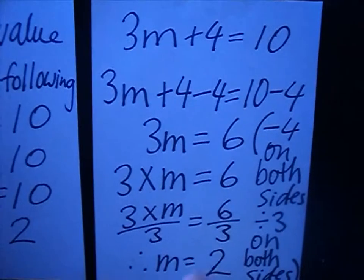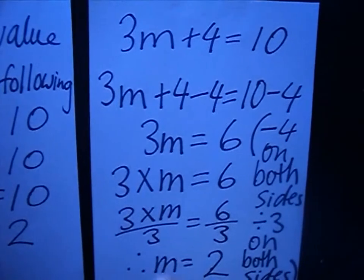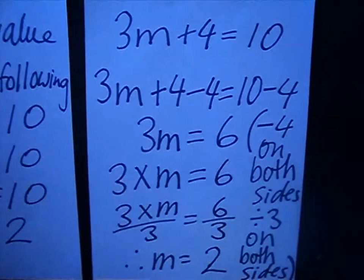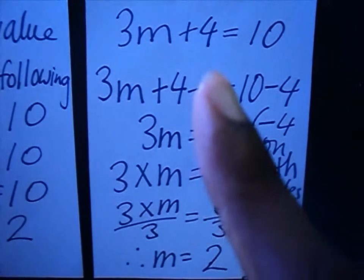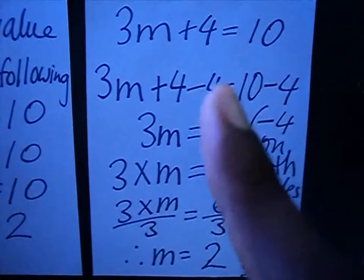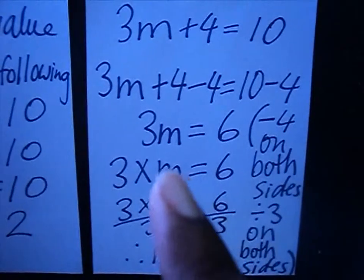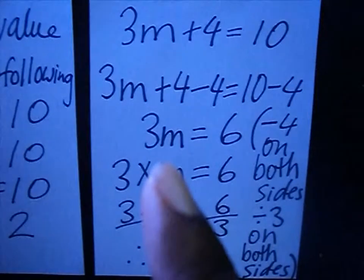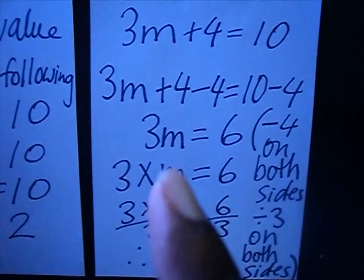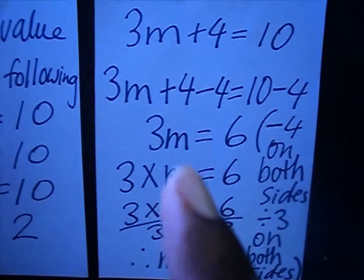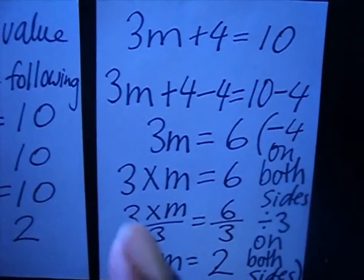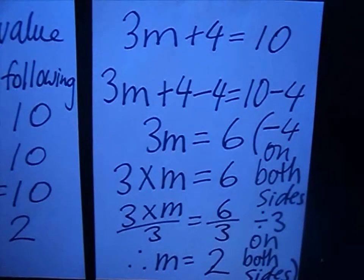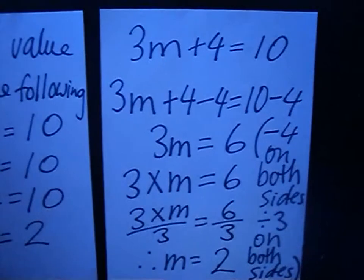So you do two things — two operations. There's an addition sign, so you first subtract: subtract 4 on both sides. When you're done, you remain with 3m is equals to 6. Then, to get rid of the 3 multiplication, the opposite is division — divide by 3 on both sides. 3 into 3 is 1, so m is equals to 2.